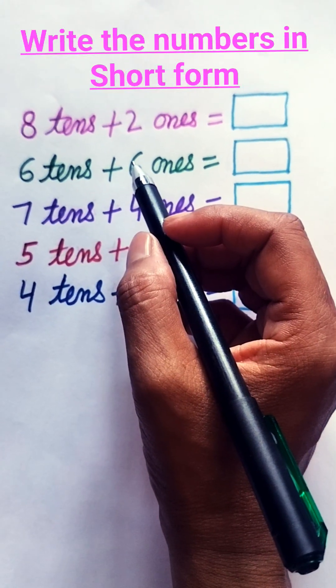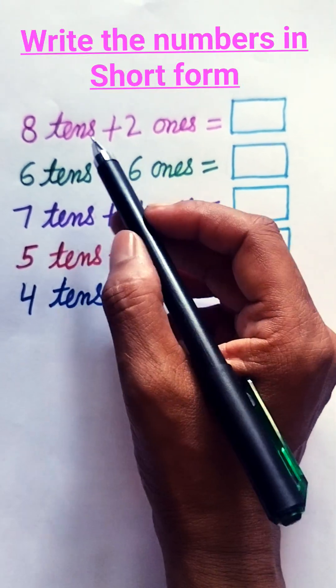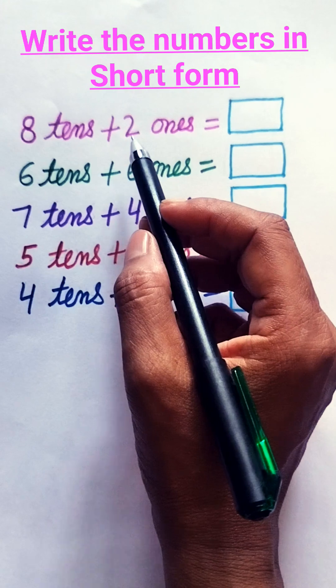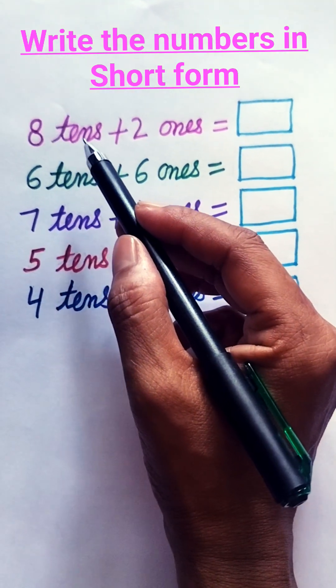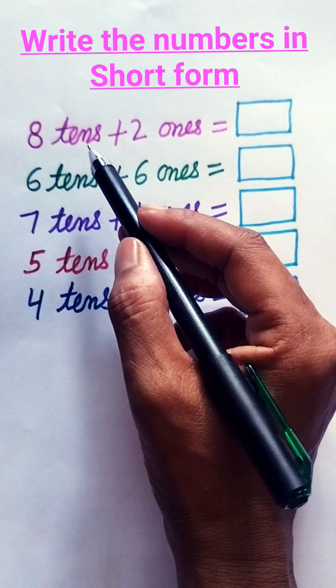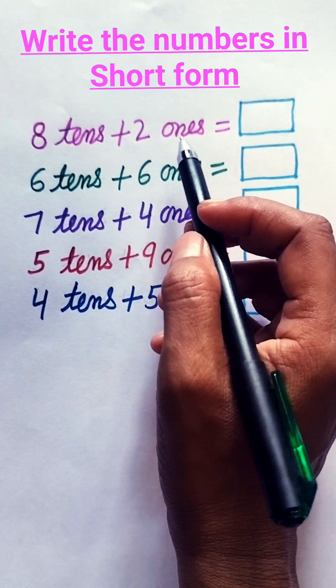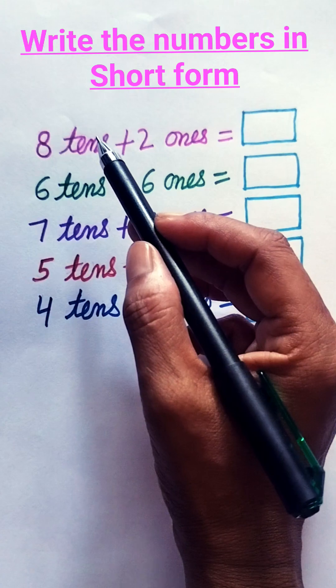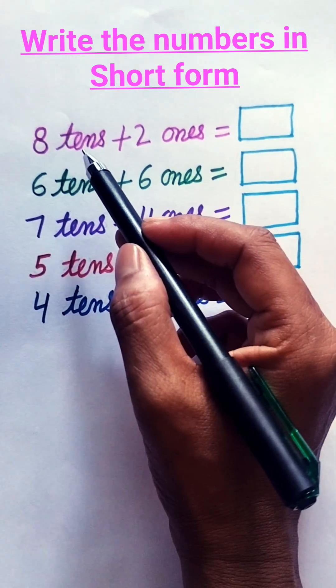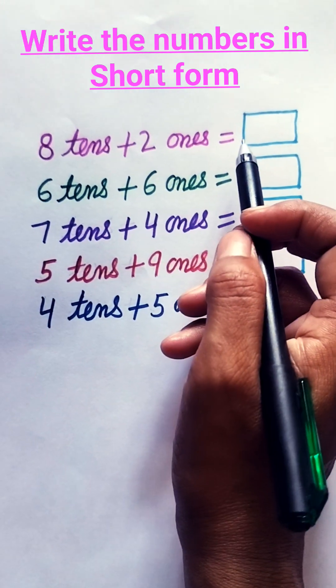Write the numbers in short form. 8 tens plus 2 ones. 8 tens means 8 multiply 10 is equal to 80, plus 2 ones means 2 multiply 1 is equal to 2. Now add 80 plus 2 equals 82.